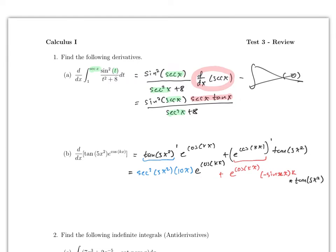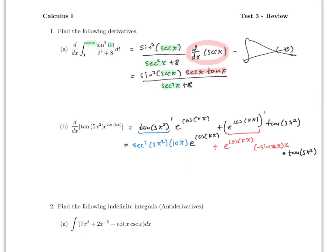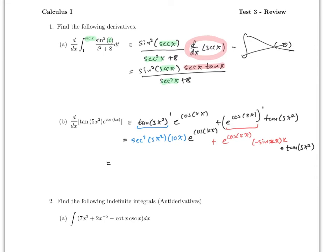Since for something like this you don't have to find the critical points, you can just do it like this. But you can clean it out a little bit. You can factor the e to the cosine kx from the whole thing, and this will give you 10x secant squared of φx squared, minus k tangent of φx squared times sine of kx. For the test, this simplified form will be enough. If you have to find critical points, then you will have to go further.